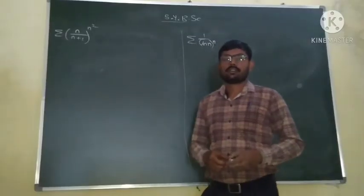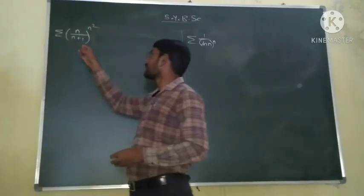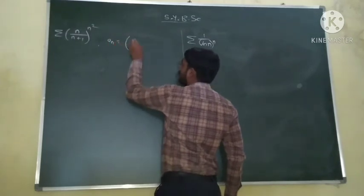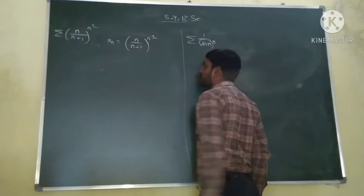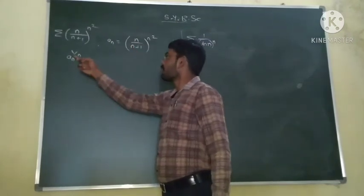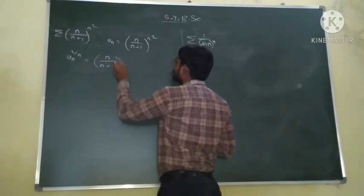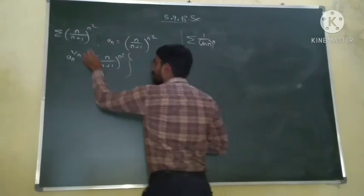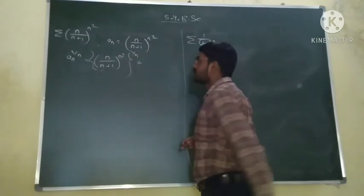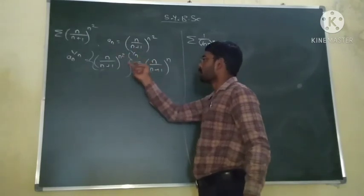We will now see examples based on Cauchy's root test. The first example is to check the convergence of the series where An equals (n/(n+1)) raised to power n². We compute An raised to power 1/n: taking the n-th root of An, the power n² becomes n²×(1/n) = n. So An raised to power 1/n equals (n/(n+1)) raised to power n.